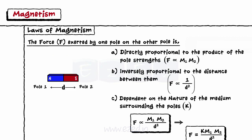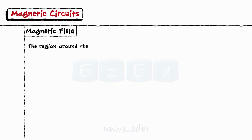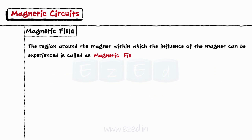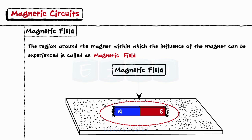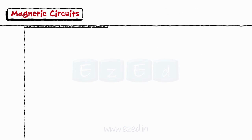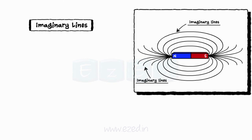The region around the magnet within which the influence of the magnet can be experienced is called as magnetic field. The span within which the iron pieces get attracted towards the magnet is the magnetic field for that magnet. The magnetic field of a magnet is represented by imaginary lines around it, which are called as magnetic lines of force.